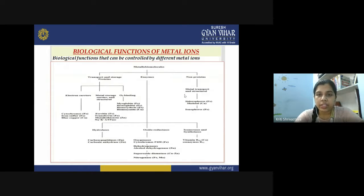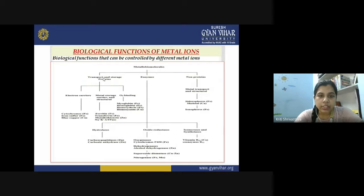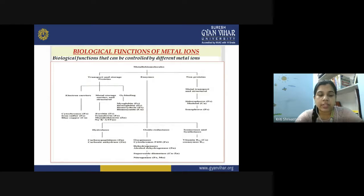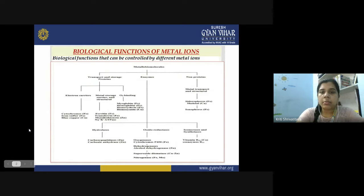Here you can see the biological functions of metal ions. So many metal ions, especially the transition metals, play a very important role in different biological functions. All the biological functions performed by such metallo biomolecules can be classified into three categories. The first is transport and storage proteins, where transition metal ions are generally involved. Transition metals have the special property of changing their oxidation states, coordination number, and having variable geometries, so they can be used as transport and storage proteins, flexibly changing their different modes.